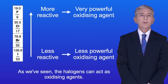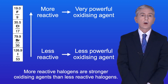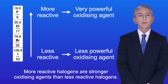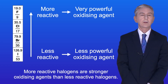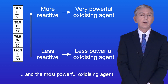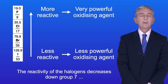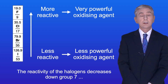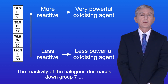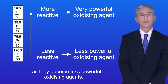So as we've seen, the halogens can act as oxidizing agents. More reactive halogens are stronger oxidizing agents than less reactive halogens. Of all the halogens, fluorine is the most reactive and the most powerful oxidizing agent. The reactivity of the halogens decreases down Group 7, as they become less powerful oxidizing agents.